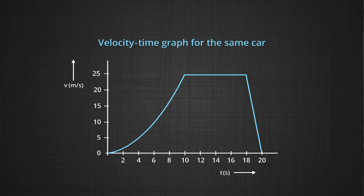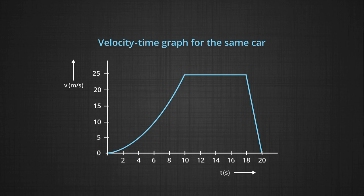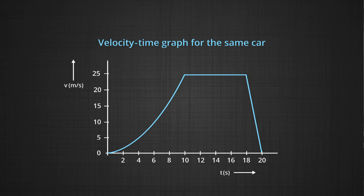The corresponding velocity time graph for the same car shows velocity in meters per second on the y-axis and time in seconds on the x-axis. From 0 to 4 seconds the velocity has barely changed, but it rises sharply to about 25 meters per second by 10 seconds. After that, the car moves with constant speed, shown as a straight line on the position time graph and a horizontal line on the velocity time graph.